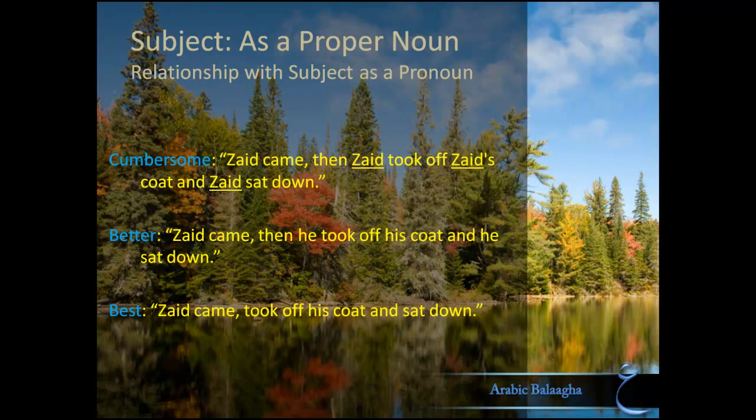Remember from the last lesson, we discussed why you would express the subject as a pronoun. We learned that it's to avoid having to say the proper noun over and over again. So you can say, for example, 'Zaid came, then he took off his coat and he sat down,' instead of having to say 'Zaid came, then Zaid took off Zaid's coat and Zaid sat down.' So it makes life easier.